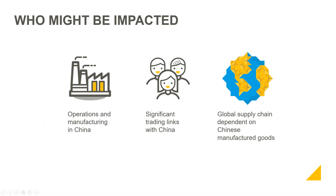For example, a company that has operations and manufacturing in China could be impacted through staff shortages or production delays. But even if you don't have operations in China, if you have significant trading links or your supply chain is dependent on Chinese manufactured goods, you are highly likely to be impacted. JCB recently announced they're going to have to reduce staff production hours in their factories due to not being able to obtain components from China — they are not manufacturing in China but are dependent on Chinese goods.